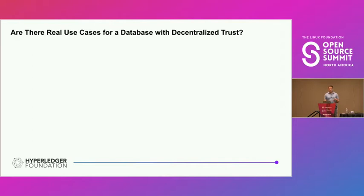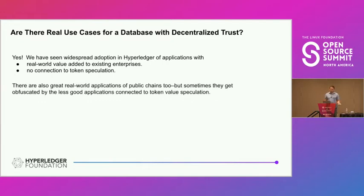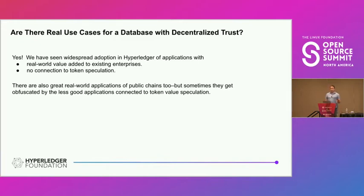Are there real use cases for a database with decentralized trust? The answer is yes. We've seen widespread adoption in Hyperledger of applications with real-world value added to existing enterprises, not connected to token speculation. There are also great real-world applications of public chains, though they get obfuscated by some of the less good applications connected to token value speculation.